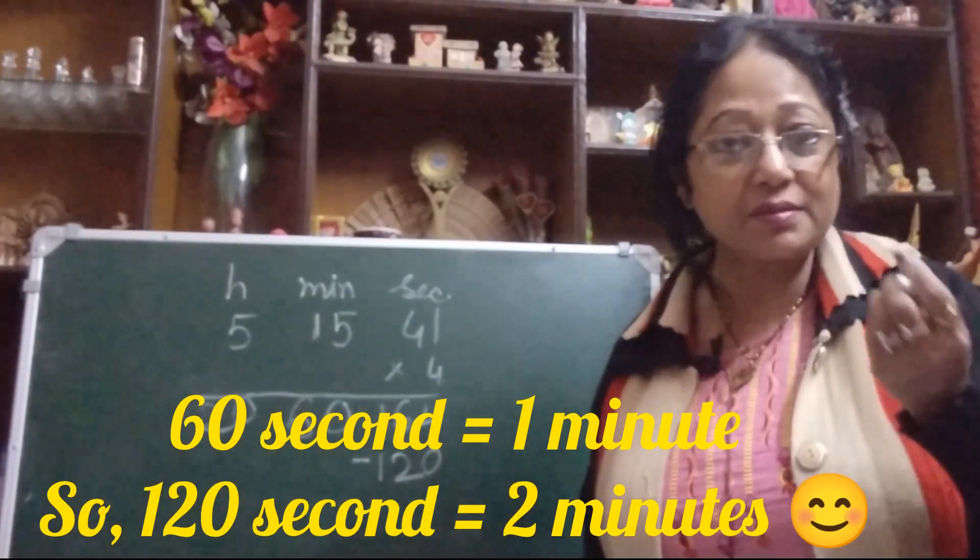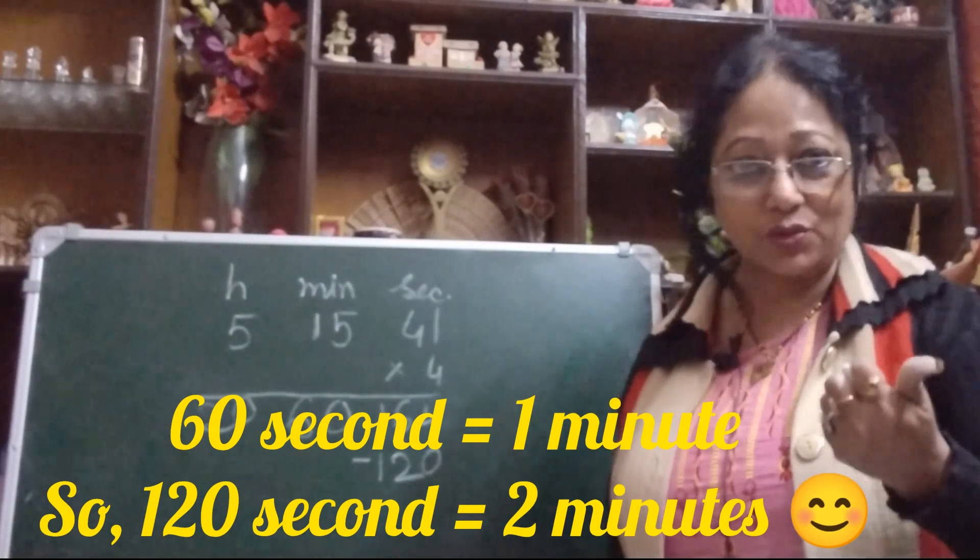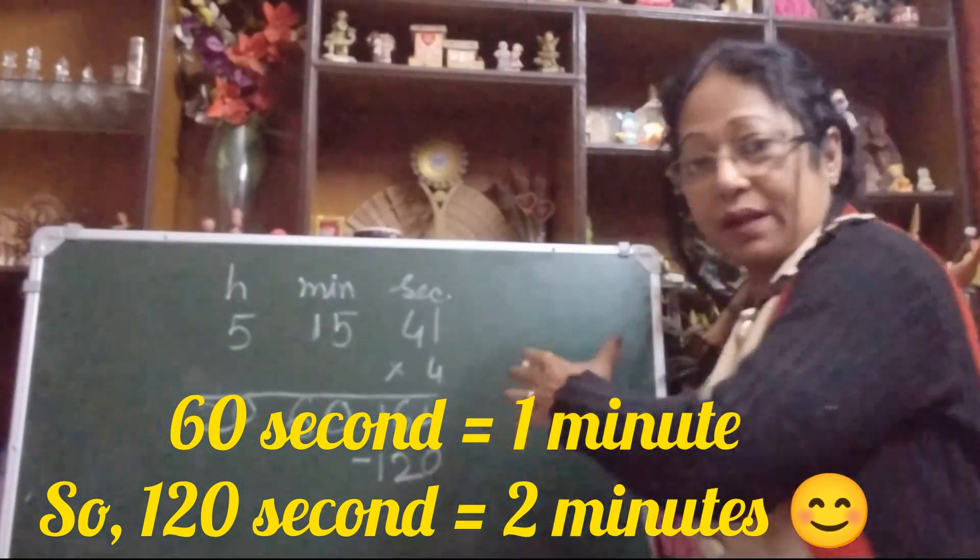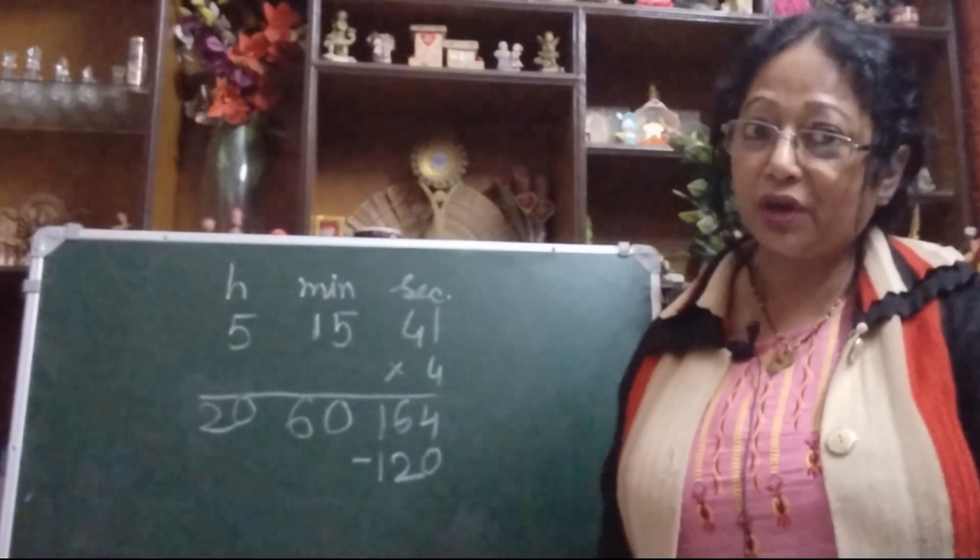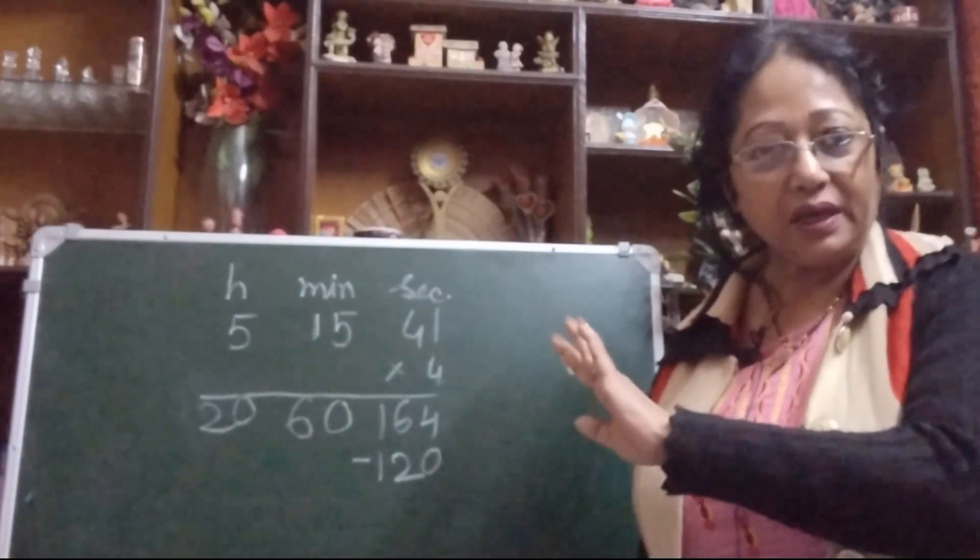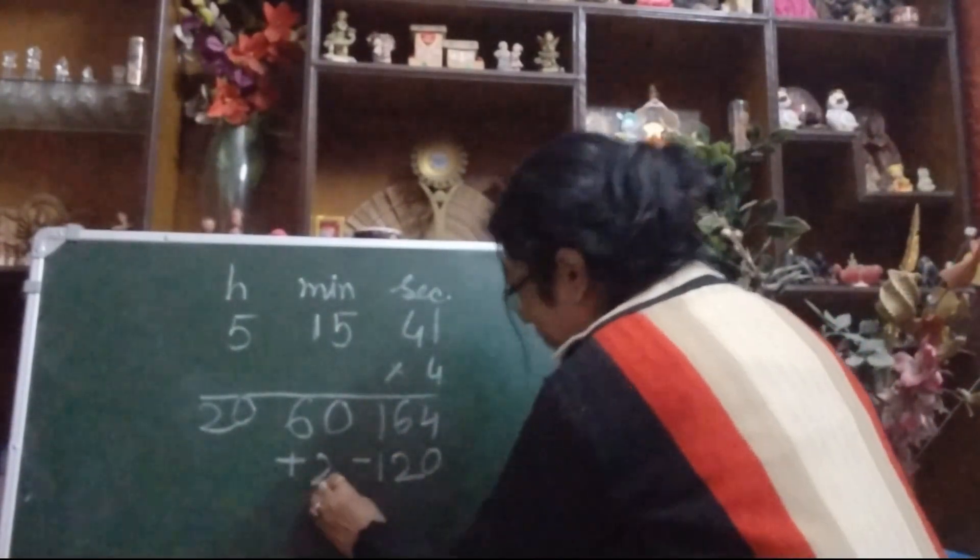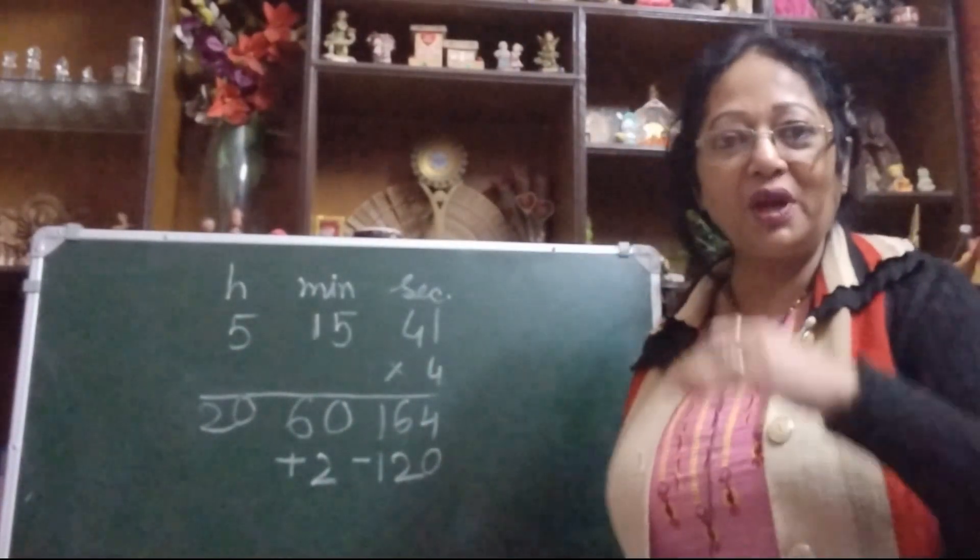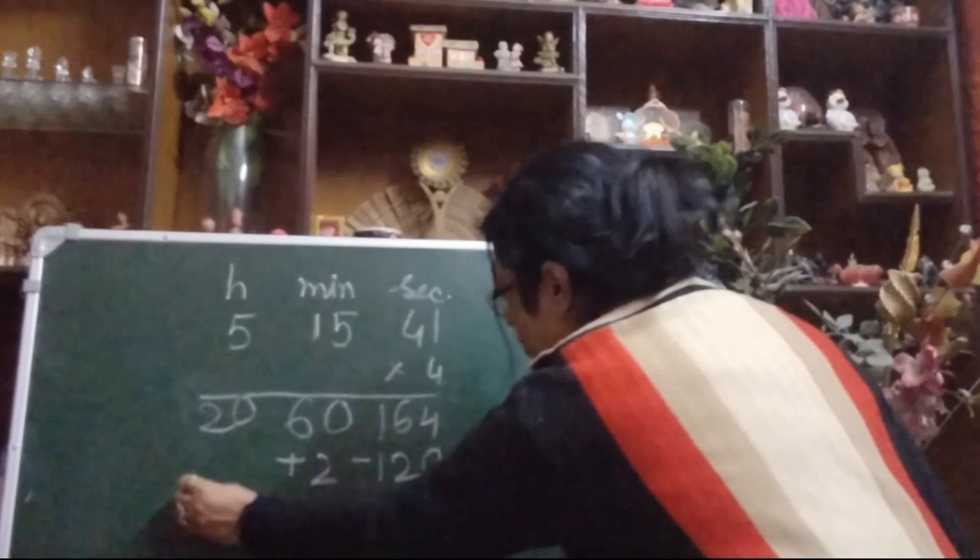120 seconds means two minutes. 60 seconds means one minute, 120 seconds means two minutes. Subtraction means I have taken, I can't keep with you. We will return it back: two minutes. So we will give this way, I have given this two minutes, you also give this two minutes.